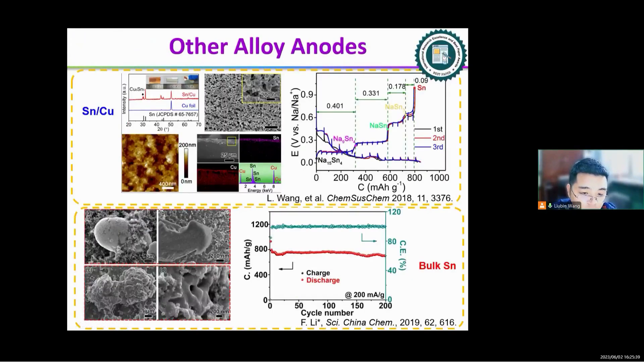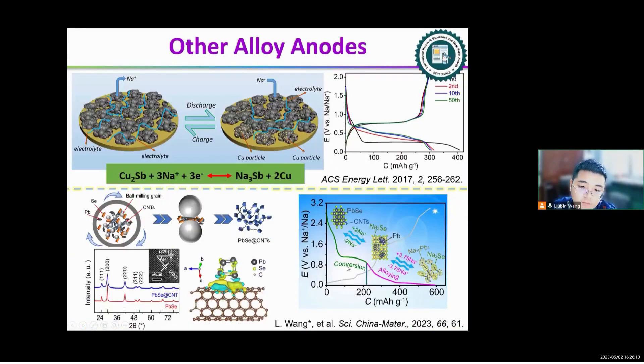We also do some works about other alloy type anodes. For example, a metallic tin anode. In this work, we used a replacement reaction method to prepare a tin-copper anode, which gives a good electrochemical performance. Another work, we combined the bulk tin with glyme-based electrolyte, also showing long cycle stability. Also, we used a replacement reaction method to prepare a cobalt-antimony alloy, which shows good cycle performance. Besides, we also used a high-energy ball milling method to prepare the lead-selenium electrode, which shows high capacity.